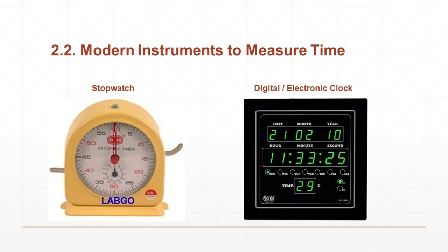We can use electronic clock, stopwatch and other instruments to count even smaller duration of time. Smaller duration of time can be calculated by using electronic clock or stopwatch. Digital watch will be used to know the small duration of time. That picture is given here. One is stopwatch and the one is digital or electronic clock.